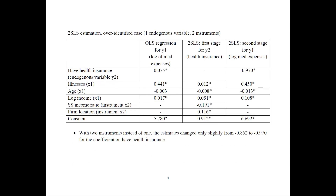In the over-identified case, we have one endogenous variable and two instruments. Instead of just the Social Security Income Ratio, I also include the multiple firm location variable. Everything is the same, except you include both instruments in the first-stage model, get the predicted values, put them in the second step, and estimate again. The coefficient changes from −0.852 to −0.970. It is good to have more instruments so you can see how your estimates change.